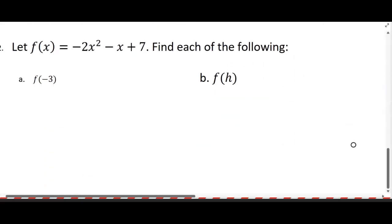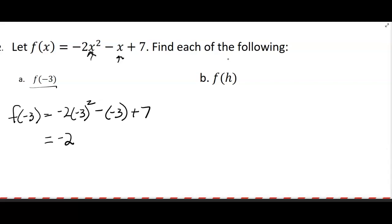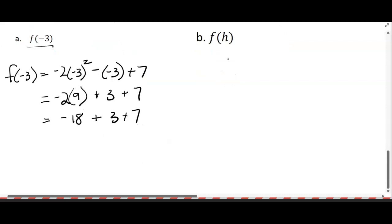Now for the next problem, find each of the following. We're finding f of negative three. That means the x's get replaced. So f(-3) = -2(-3)² - (-3) + 7. Working the math using the order of operations, negative two times nine—negative three squared is nine—plus three plus seven. So that gives us -18 + 3 + 7, which is -18 + 10, and that's negative eight.